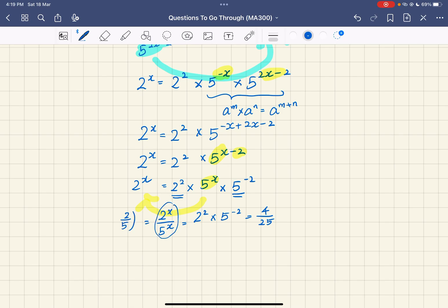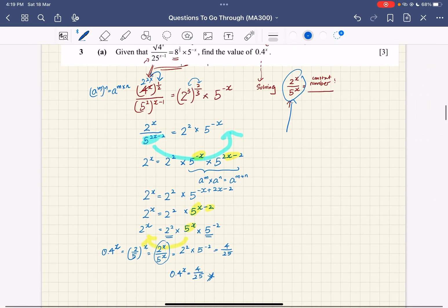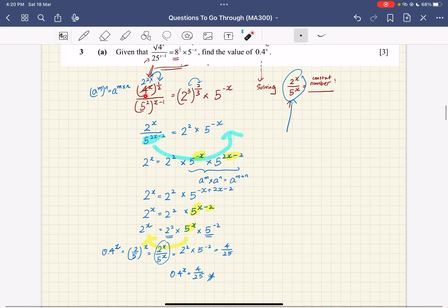Can you see that this is basically (2/5)^x, which is also 0.4^x? And there you go: 0.4^x equals 4 over 25. So if you look at the whole question in totality, what we're doing is splitting everything to base 2 and base 5, then pushing the 2^x and 5^x to the left and putting all the constants towards the right side in order to solve the question. Thank you.